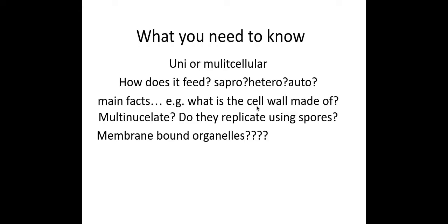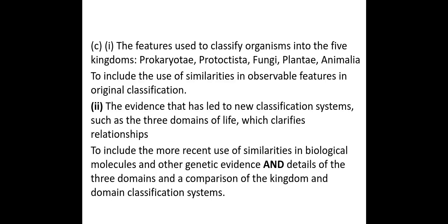We also need to know some main facts: what the cell wall is made of, whether it is multi-nucleate — meaning many nuclei within one cell — whether they replicate using spores, and whether they have membrane-bound organelles. If you want to pause the video and try to figure out these details for the five kingdoms yourself, that might be a good idea.